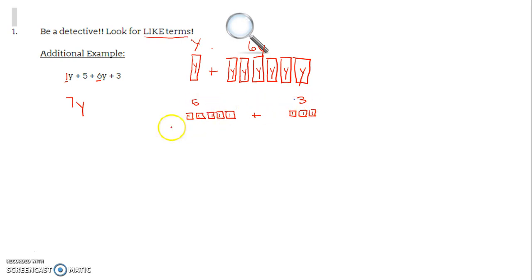Therefore, 5 plus 3, what do I have? Well, I have 1, 2, 3, 4, 5, 6, 7, 8. Oh, I have a total of 8, so I need an 8 here. So I have 7y, 5 plus 3 is 8, so I have 7y plus 8.